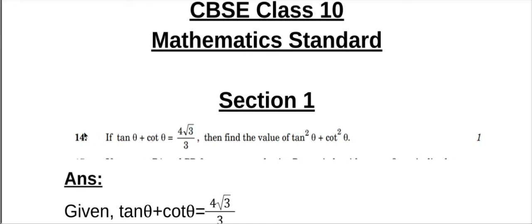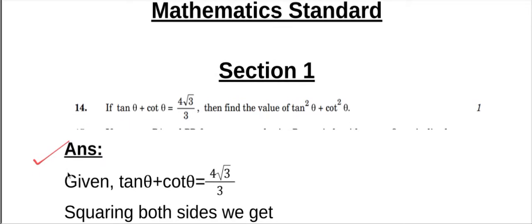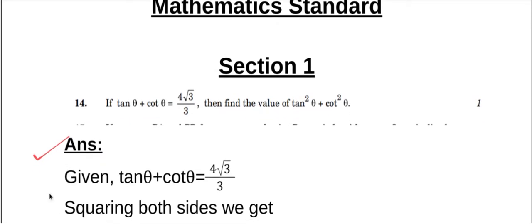Question number 14: if tan θ plus cot θ equals 4√3 by 3, then find the value of tan²θ plus cot²θ. So let's find the answer. Given: tan θ plus cot θ equals 4√3 by 3.